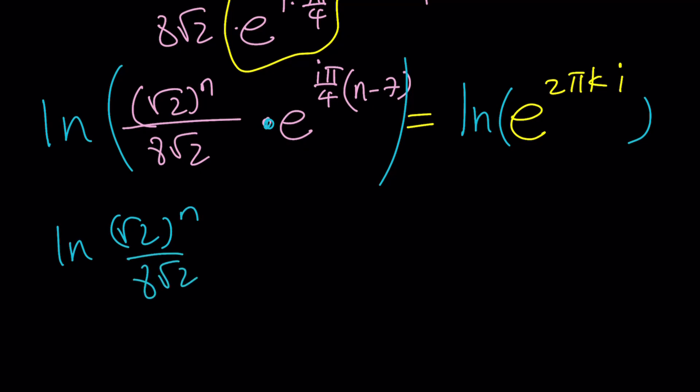Plus, and when you ln e, it's going to be 1. So this is going to be iπ/4 · (n-7). And this is just going to be 2πki · ln(e), but ln(e) is equal to 1 again. That's why you don't need to write it.